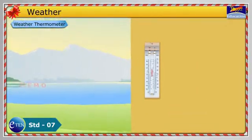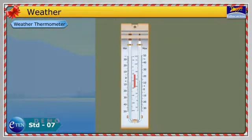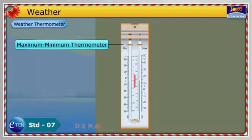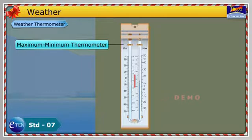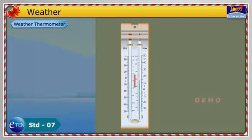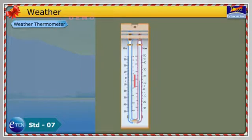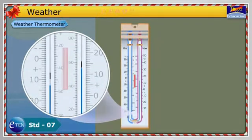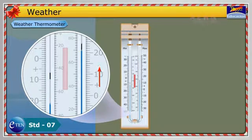A special thermometer called the maximum-minimum thermometer is used to measure the maximum and minimum temperatures in a day. Maximum and minimum thermometers have two mercury columns — one column goes up when temperature increases, and the other column goes down when the temperature increases.